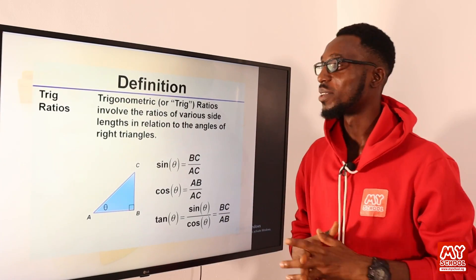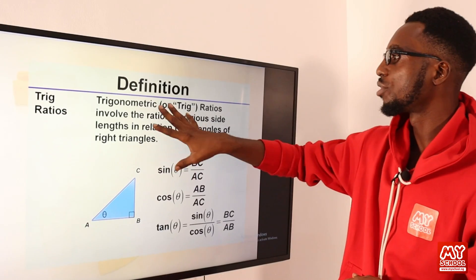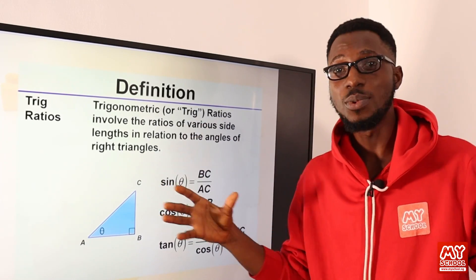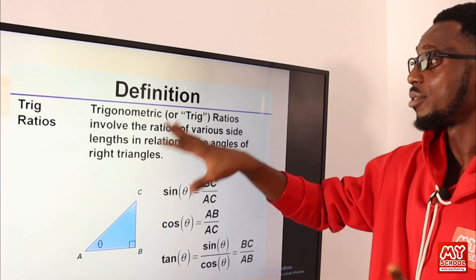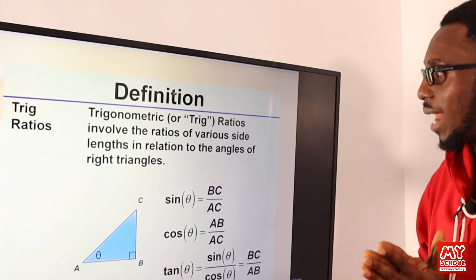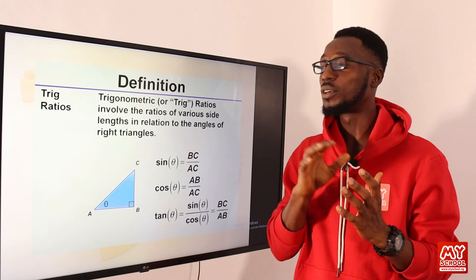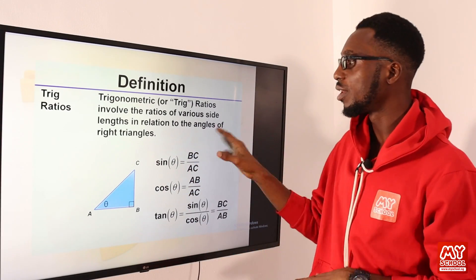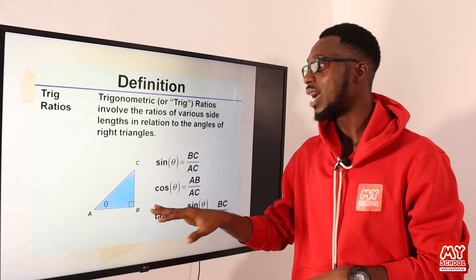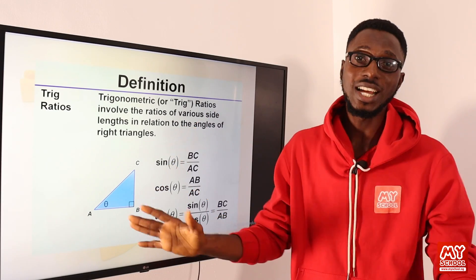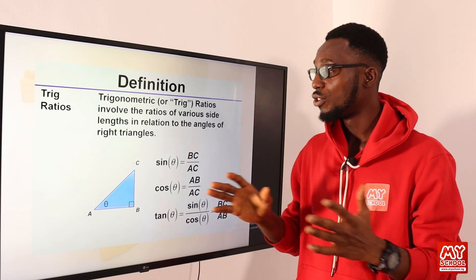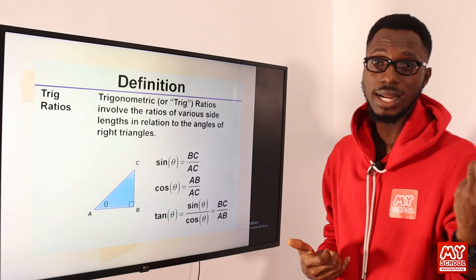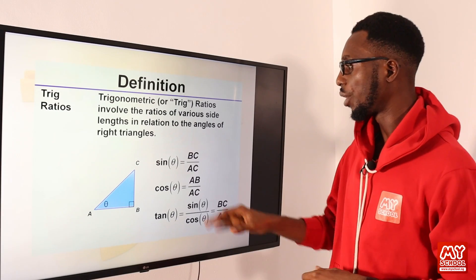We see another definition — trig ratios. Trigonometric or trig ratios involve the ratios of various side lengths in relation to the angles of the right angle triangle. We have different types of triangles — we treated this earlier in geometry. You have your isosceles triangle, your scalene triangle, the right angle triangle, and your equilateral triangle. You can see the expressions: we have sin theta, cos theta, and tan theta.